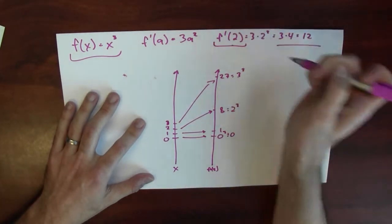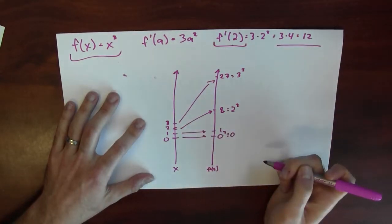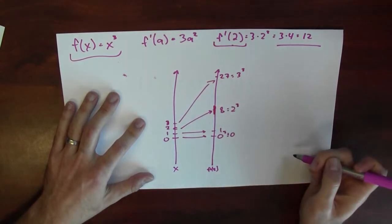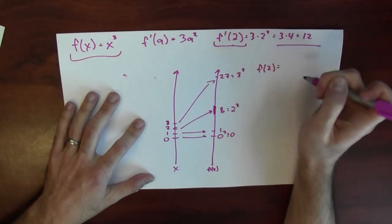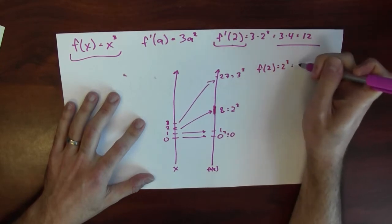Now what does it mean to say the derivative at 2 is 12? Well, it means that a small change to 2 would be magnified 12 times as much around 8. Let's just see that in action. So f of 2, the function, not the derivative, just the function at 2, that's 2 cubed, that's 8.